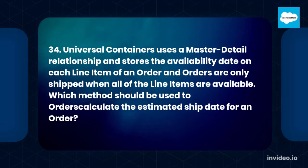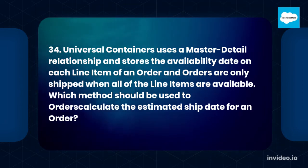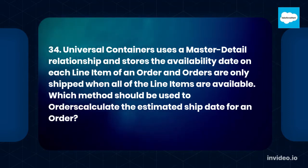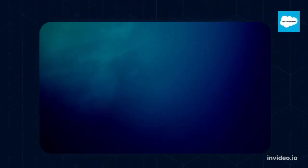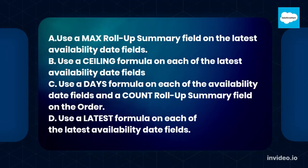Question 34. Universal Containers uses a master-detail relationship and stores the availability date on each line item of an order. Orders are only shipped when all of the line items are available. Which method should be used to calculate the estimated ship date for an order? A. Use a max roll-up summary field on the latest availability date fields.